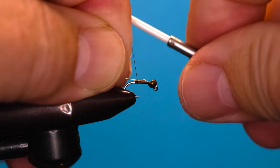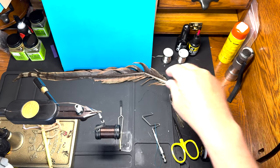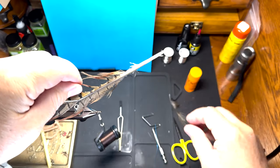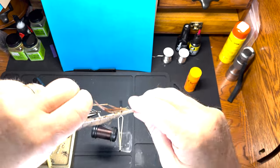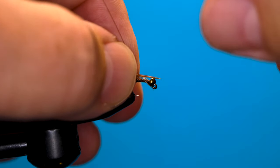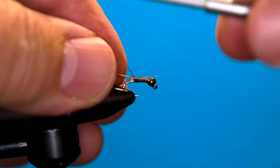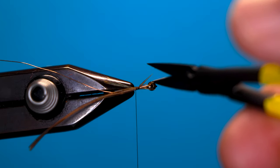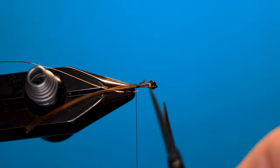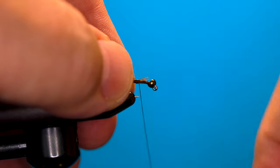And we'll get a few pheasant tail fibers. Get those in and trim them, and we'll get everything bound up tight to the front.